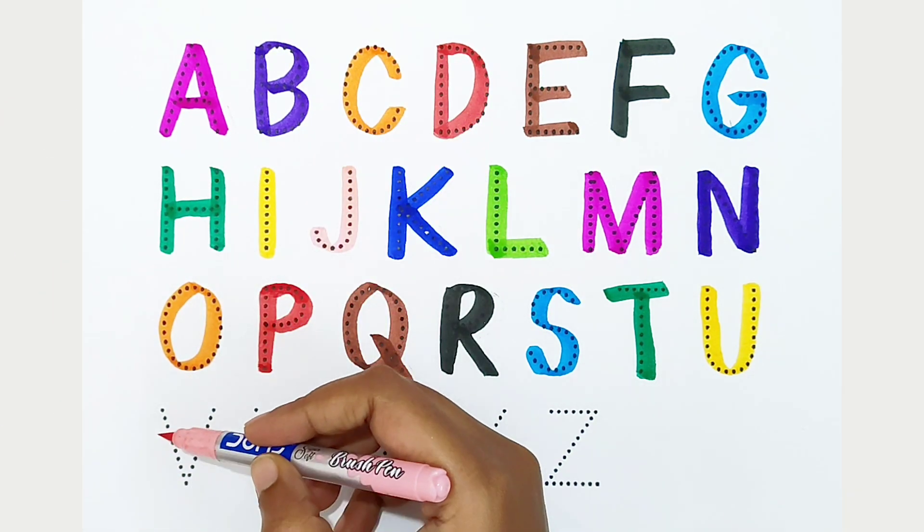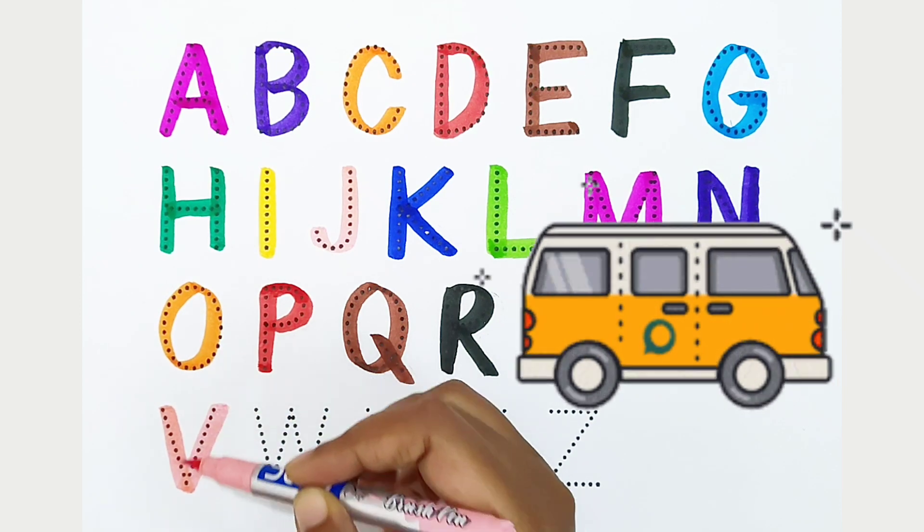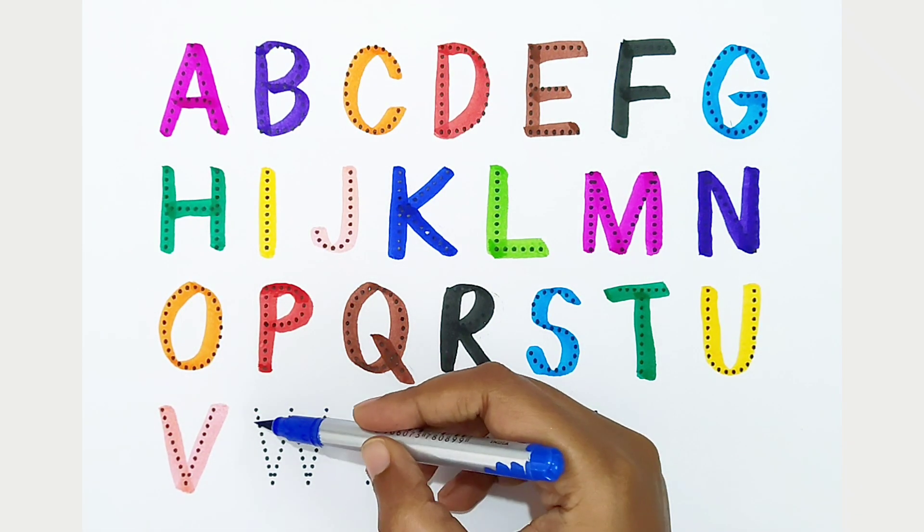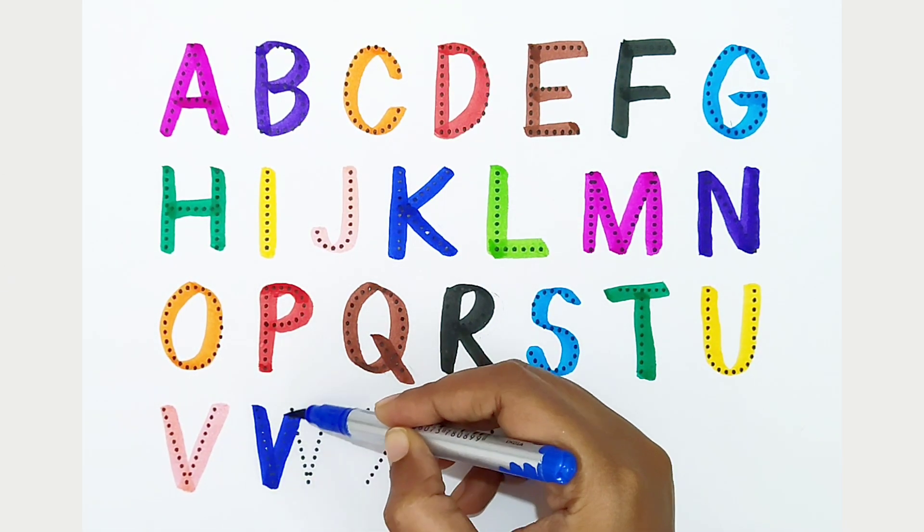V, light pink color, V is for van. W, dark blue color, W is for water.